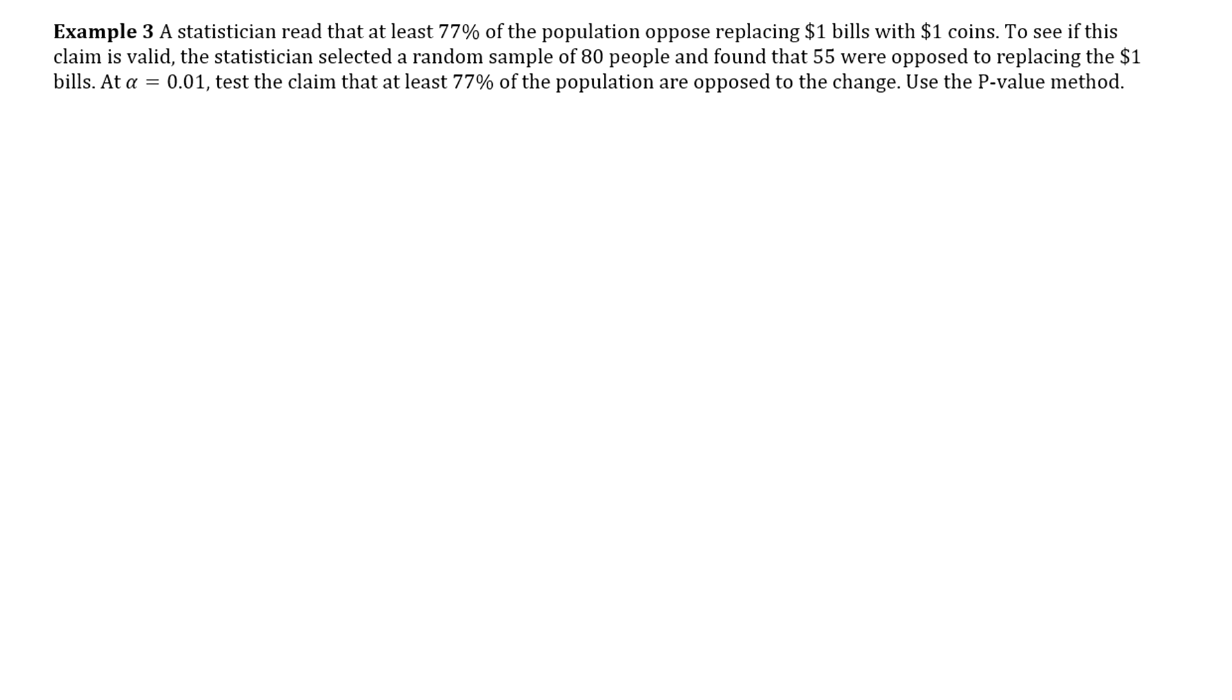Example three says a statistician read that at least 77% of the population opposed replacing $1 bills with $1 coins. To see if this claim is valid, they select a random sample of 80 people and found that 55 were opposed to replacing the $1 bills. Level of significance is 0.01. Test the claim that at least 77% of the population are opposed to the change. Use the p-value method. Okay, so p-value method, it's the four steps. So step one, we'll state our hypotheses.